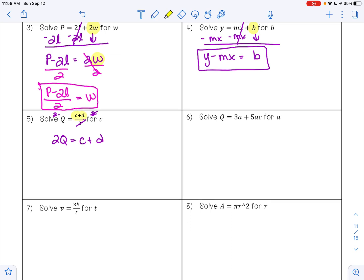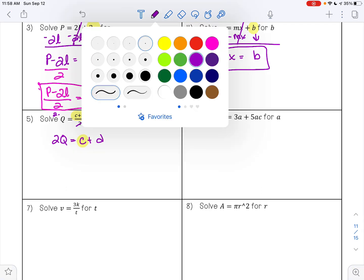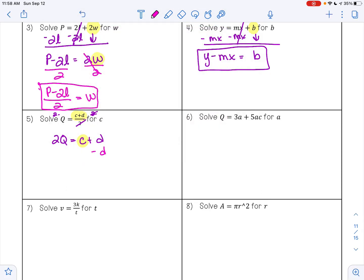Now I want to get C alone. To undo addition, I'll do subtraction, and I'll subtract the letter D on both sides. 2Q minus D will stay that way. I'll bring down my equal sign. I'll bring down C. D minus D is zero. So my answer is 2Q minus D is equal to C.